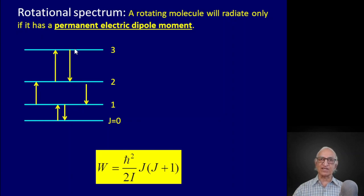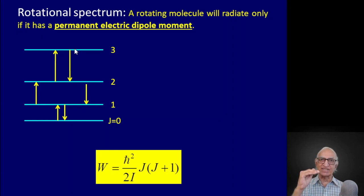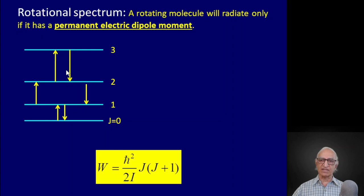This is the opposite of the energy levels of a hydrogen atom, which are proportional to 1 over n squared — so in a hydrogen atom the energy level spacing decreases as one goes to higher energy levels, whereas for a rotating molecule the energy level spacing increases. According to quantum mechanics, a molecule will absorb or radiate depending on whether it jumps from a lower level to an upper level or from an upper level to a lower level.